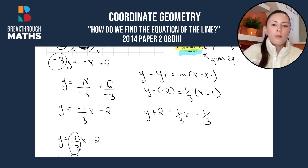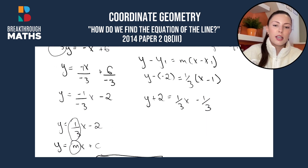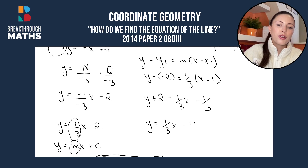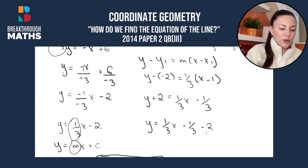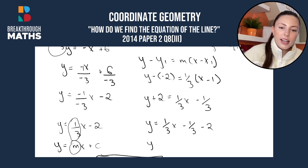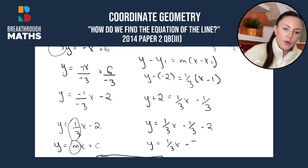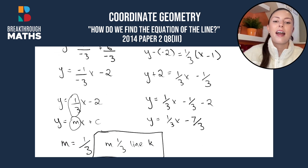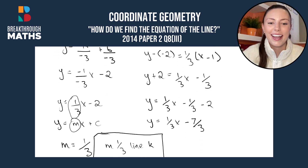We'll write it in the form y = mx + c, keeping y on the left. We'll have 1 third x, and then minus 1 third minus 2. So y = 1 over 3x minus 7 over 3. And that's our equation of the line k.